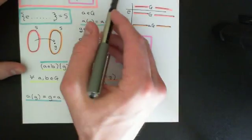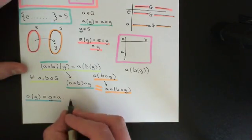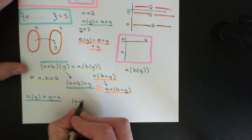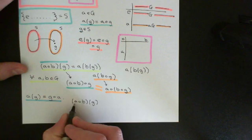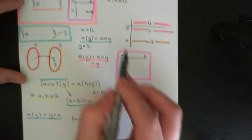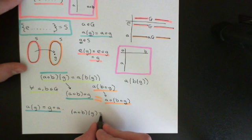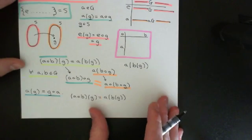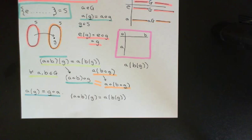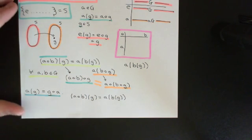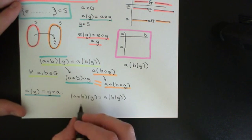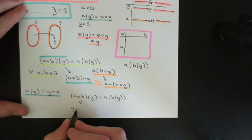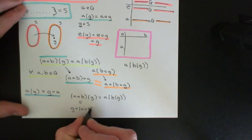We take arbitrary elements a and b. What we'd like to show is that the set permutation associated with a∘b applied to g equals a applied to b applied to g — and we'd like this to hold for all a and b in G. If we did show that, we'd again show that the original group composition law represents the composition of these set permutations. So where does this fail? Let's apply the definition. On the left-hand side, using the definition, this gives g∘(a∘b).